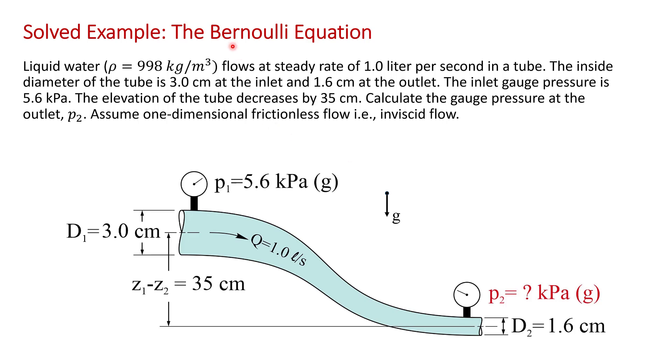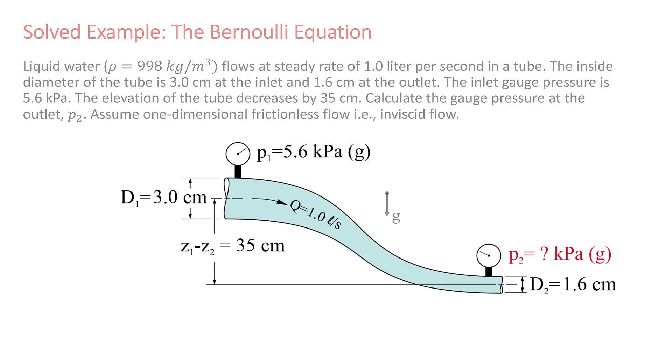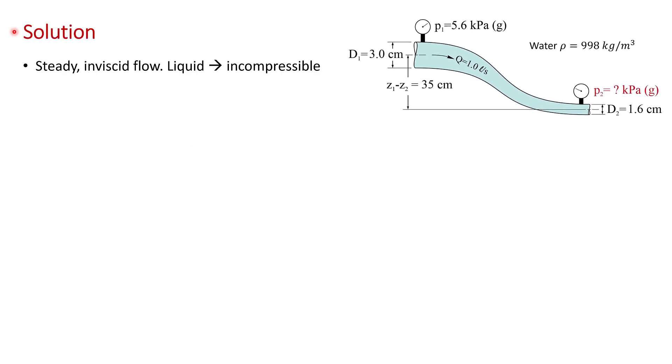As I mentioned, this is a Bernoulli equation classic. We're told in the problem statement that the flow is steady and inviscid, so there are no viscous effects. Because the fluid is a liquid, in this case water, the flow will be incompressible.